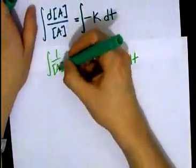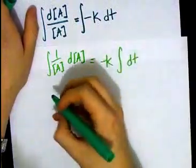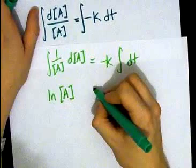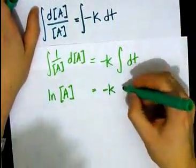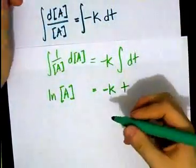Anyways, what's the integral of 1 over A? I ask you. You tell me. The answer is ln of A. I ask you what the integral of 1 is, and you tell me it is T. Hey look, you're right because you're smart.